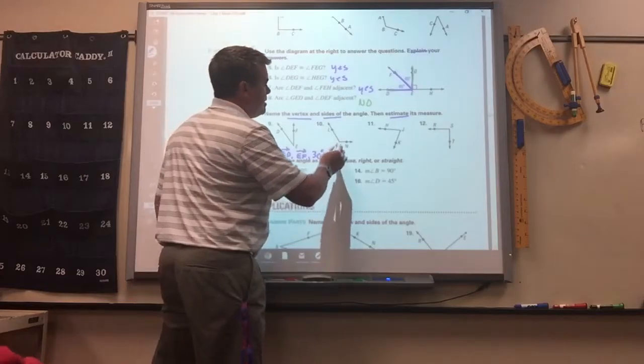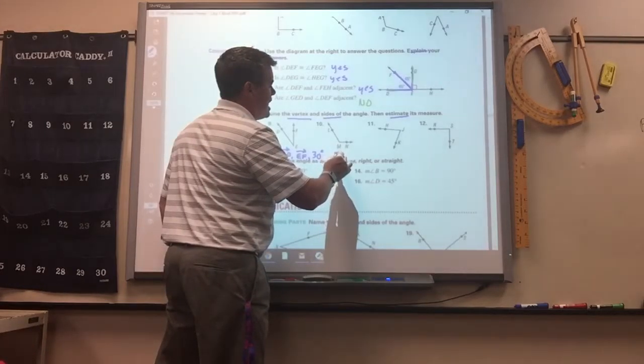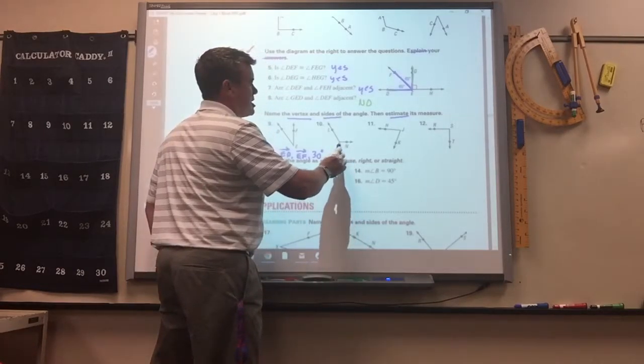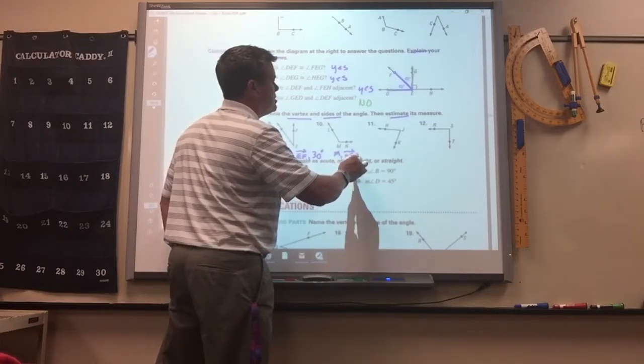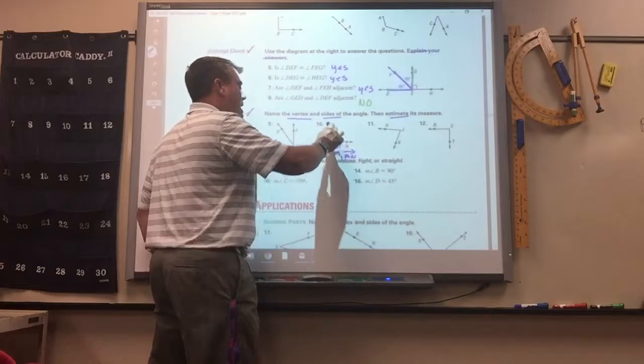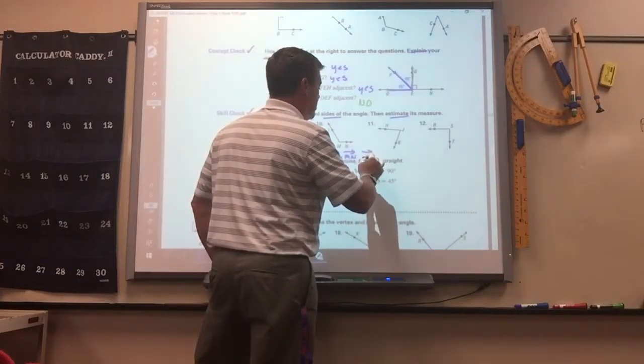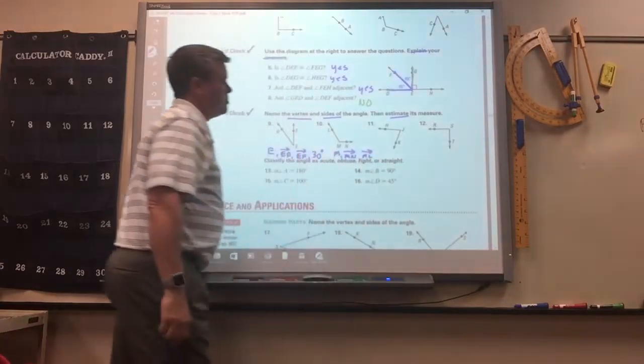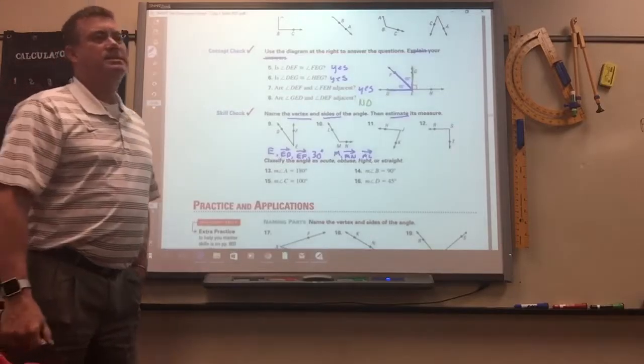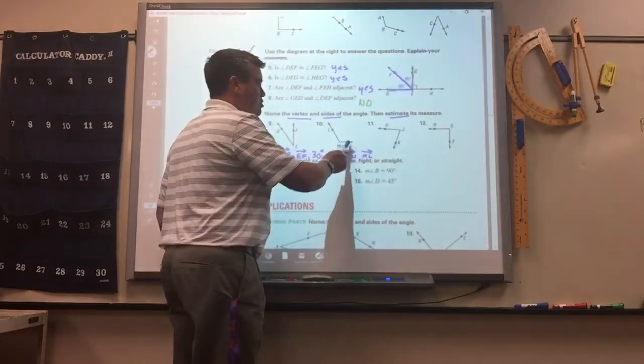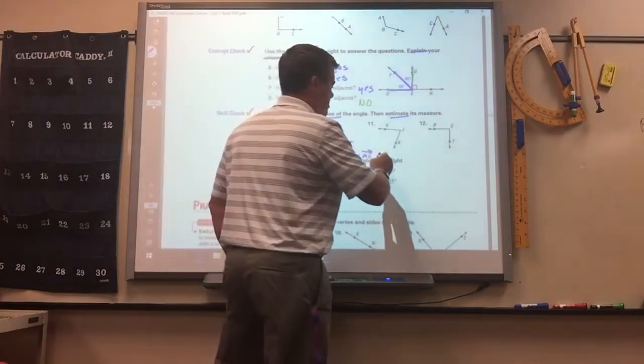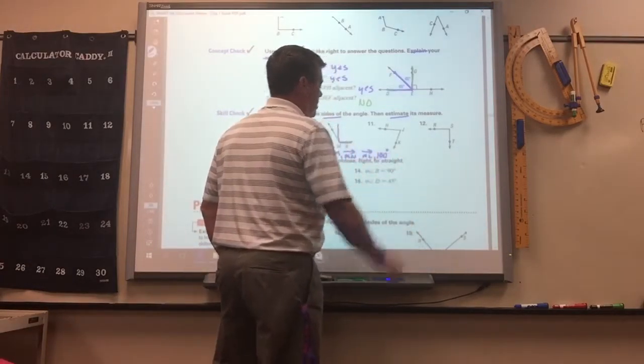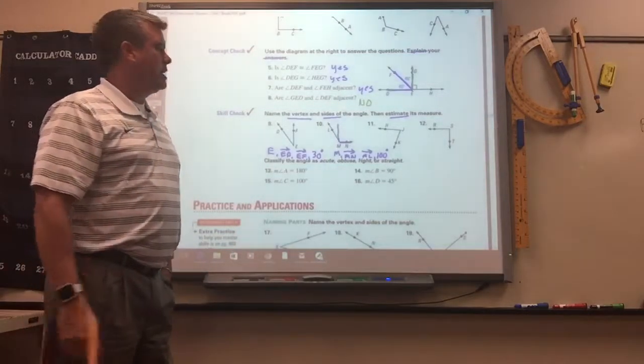So, for number 10, the vertex is M. The side is MN, RE MN, so you put the RE symbol above it. And RE ML are the two sides. 100. 100? It's over 90, right? Yep. This would be a 90. So, anything around 100, 110 would be a good guess.